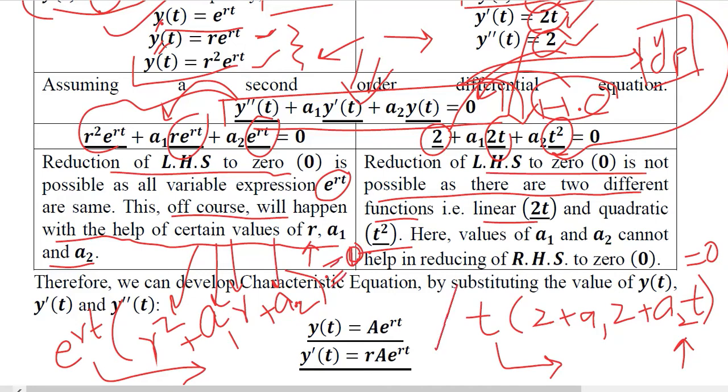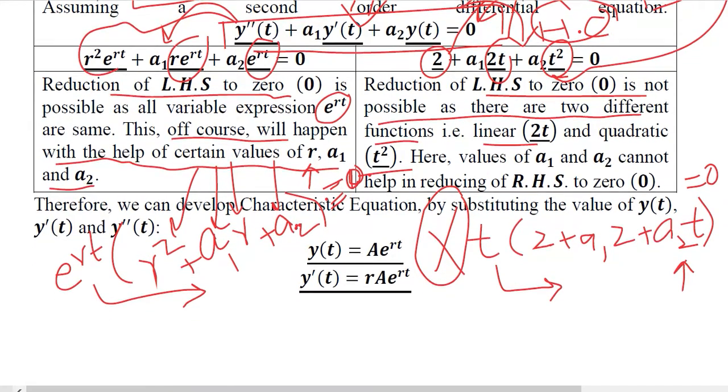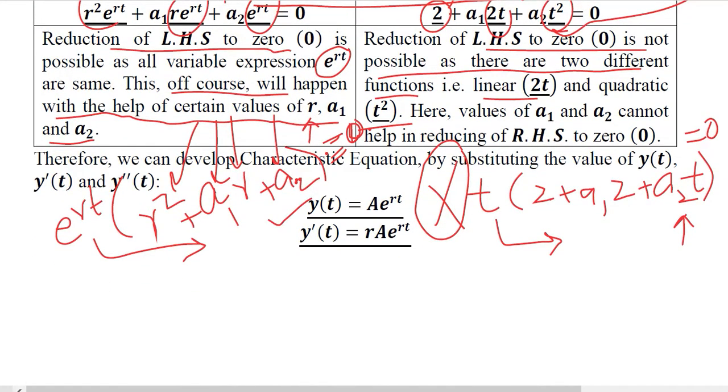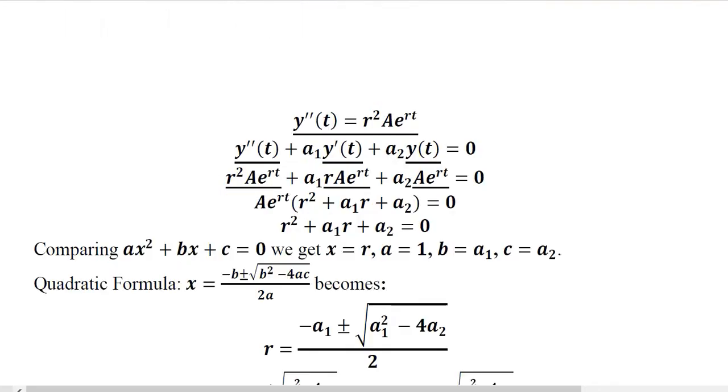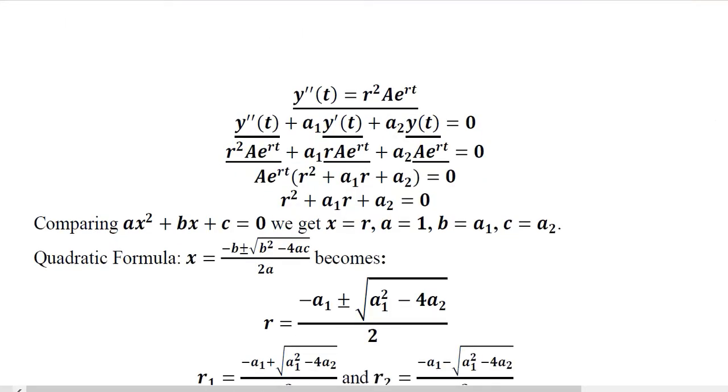So here the root is not working so we have to drop this possibility and we can choose this possibility, that is the possibility on the left hand side. So choosing this and then its derivative can be used just because it is the second order differential equation. The second order derivative is also used.